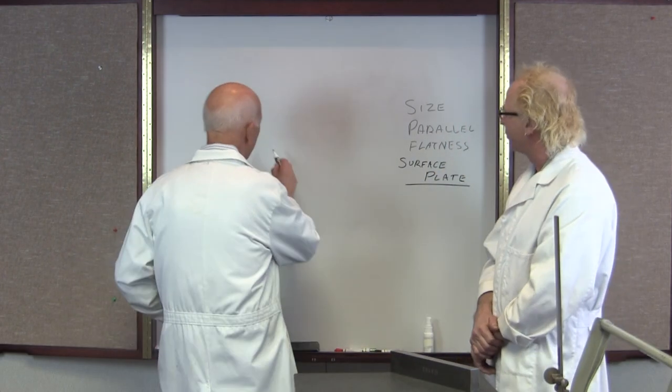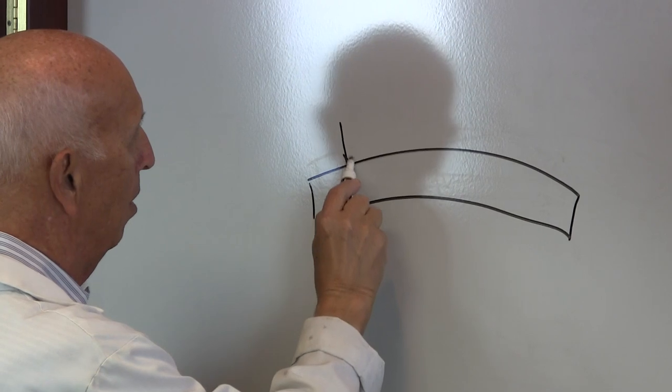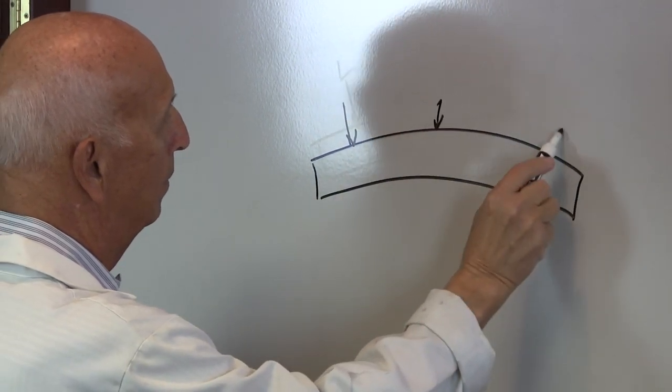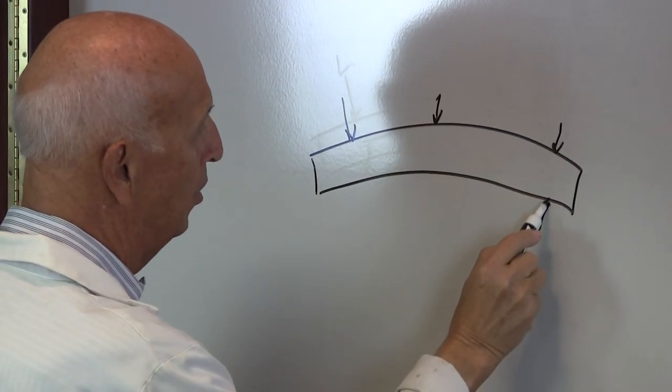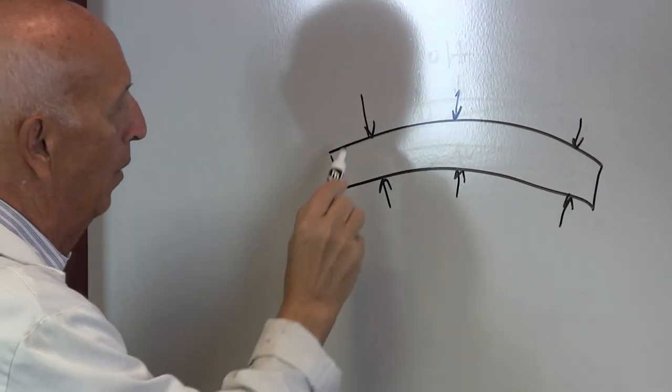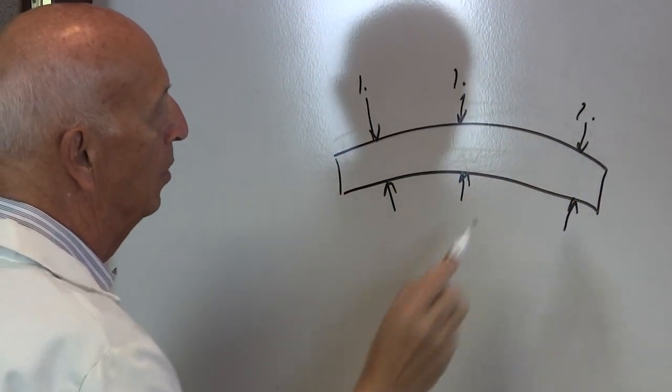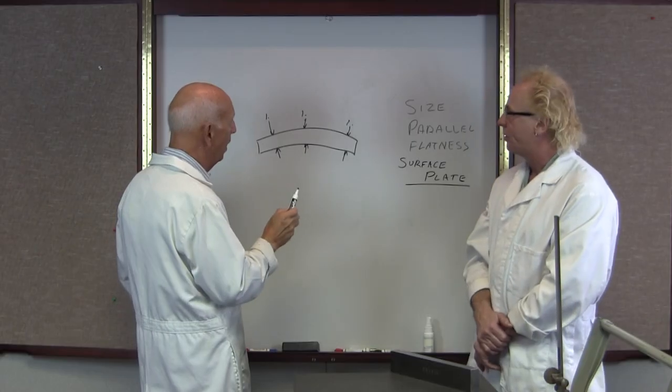Well, if I were to take the micrometer and check this in four or five spots, it could be the same size, would you agree? Yes. For example, let's suppose the parallel looked like this, but I checked it here, here, and here. Now this is a pinpoint measurement, right? Yes.